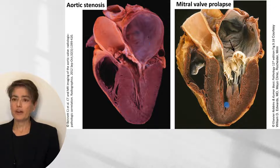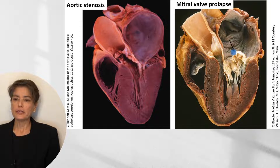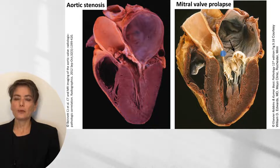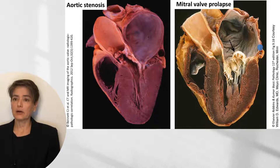In mitral valve prolapse, recognized by the hooding of the mitral valve leaflet, while the left ventricle may be mildly hypertrophic, the predominant finding is left atrial dilation, with all of the clinical consequences mentioned for this scenario.